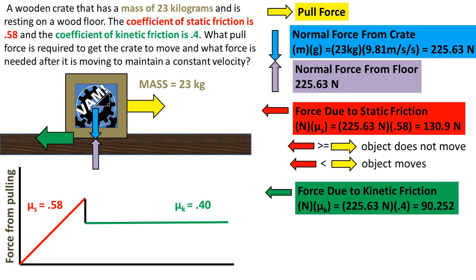Once the object starts moving, it will be slowed down by the kinetic friction, which can be found by taking the normal force times the coefficient of kinetic friction. Doing so, we are left with the force from kinetic friction of 90.252 newtons.